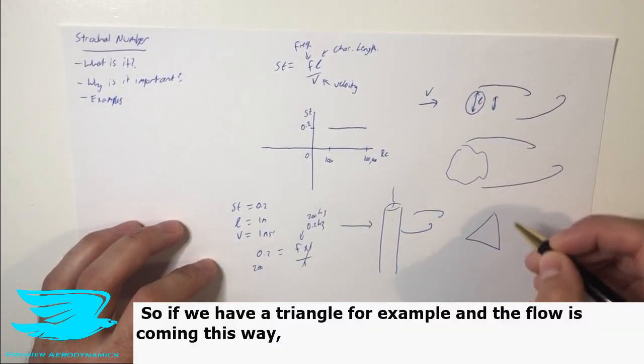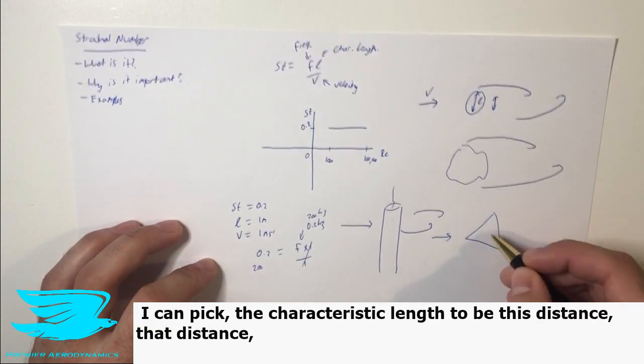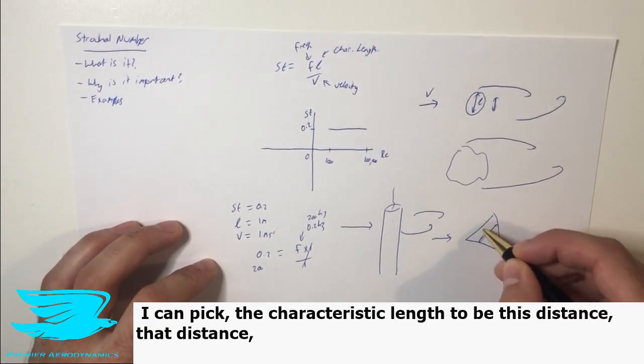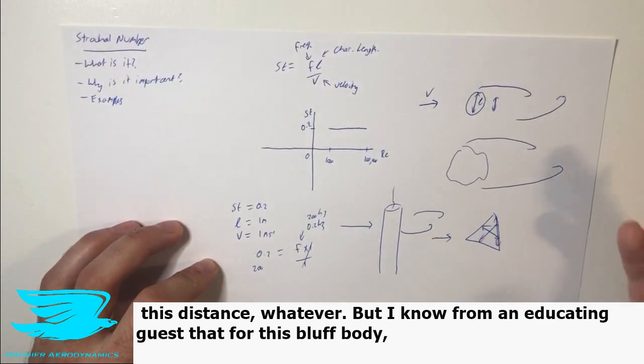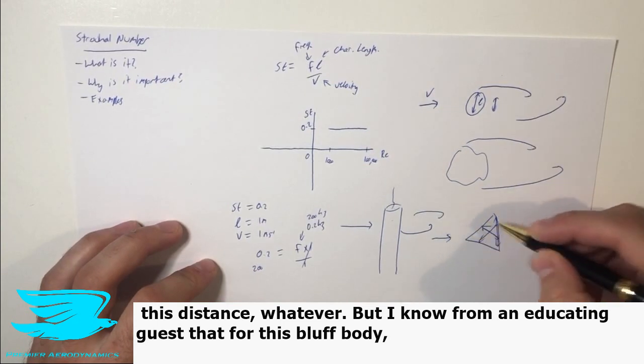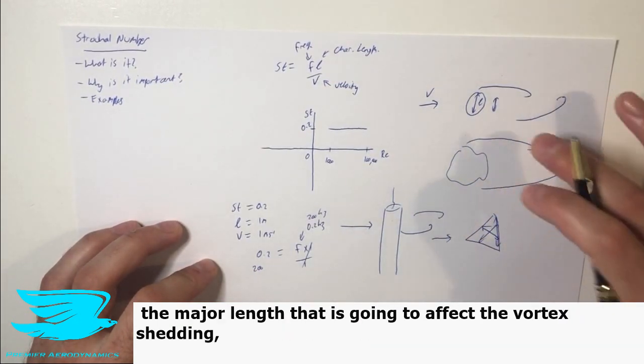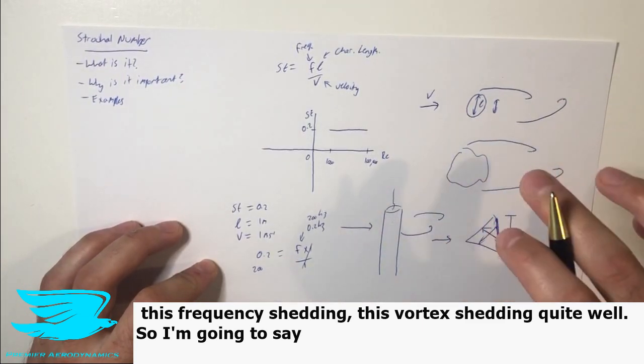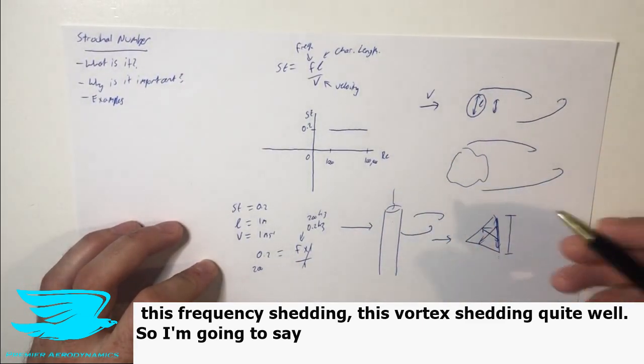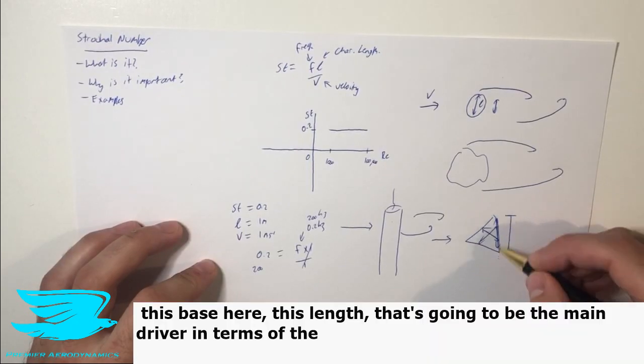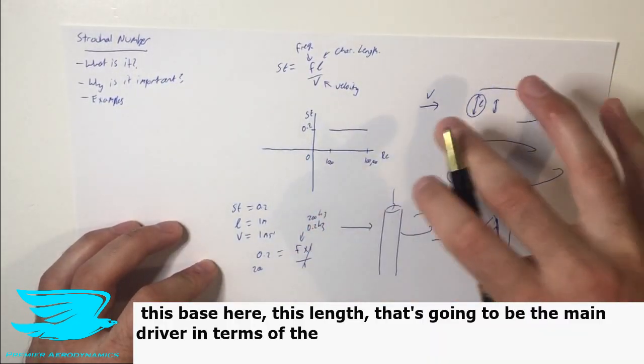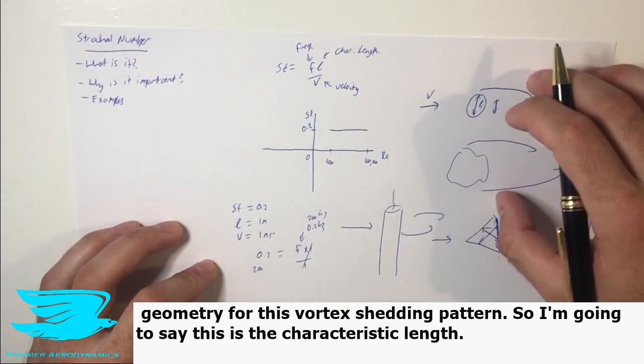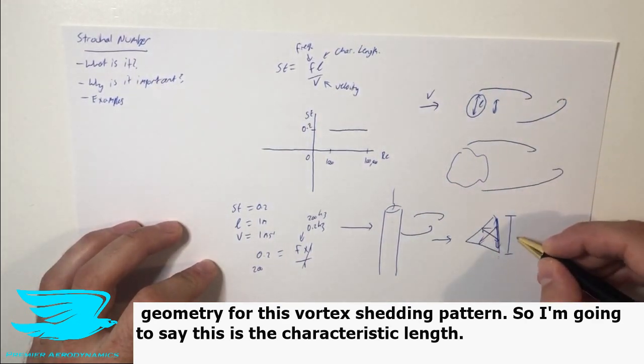So if we have a triangle, for example, and the flow is coming this way, I can pick characteristic length to be this distance, that distance, this distance, whatever. But I know from, like an educated guess, that this bluff body, the major length that is going to affect the vortex shedding, is going to be this base here. So I want to make sure that I sort of characterize this frequency shedding, this vorticity shedding, quite well. So I'm going to say, this base here, this length, that's going to be the main driver in terms of the geometry for this vortex shedding pattern. So I'm going to say this is the characteristic length.